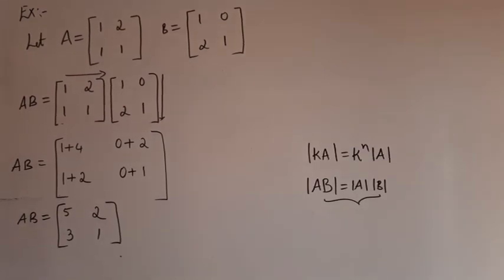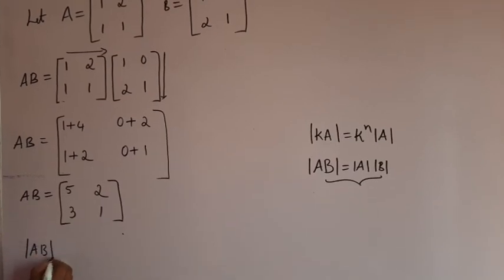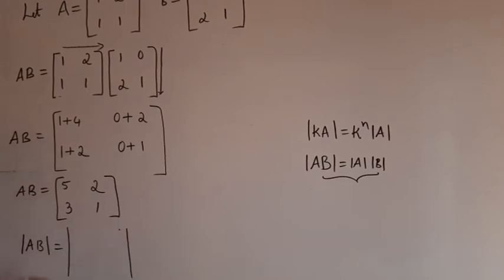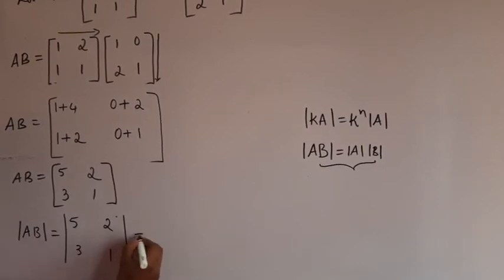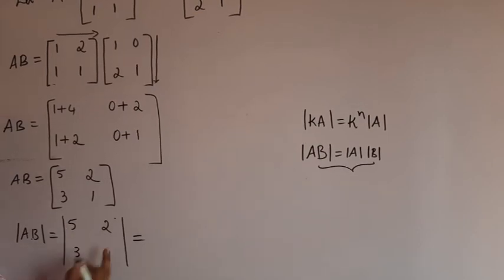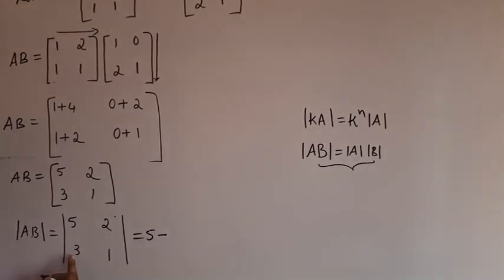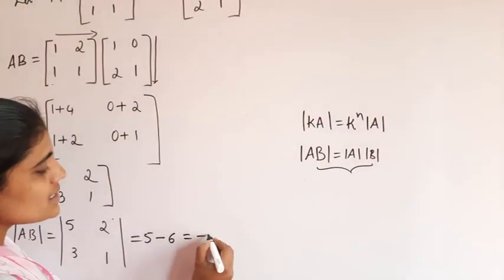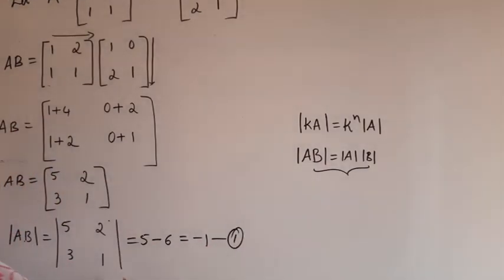Now find the determinant value. Determinant of AB equals the determinant of [5, 2; 3, 1]. Expanding: product of principal diagonal is 5×1 = 5, minus product of secondary diagonal is 3×2 = 6. So 5 minus 6 equals minus 1. Call this equation 1 — this is the LHS.